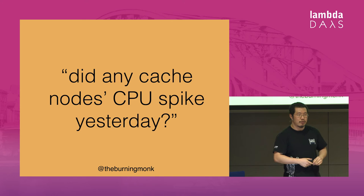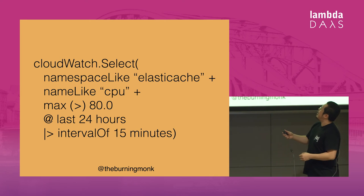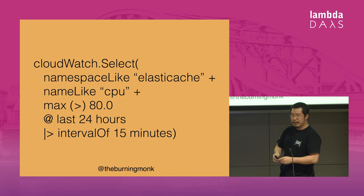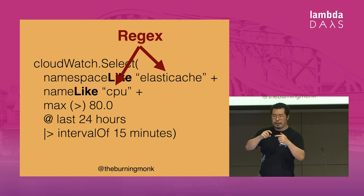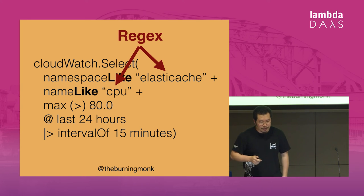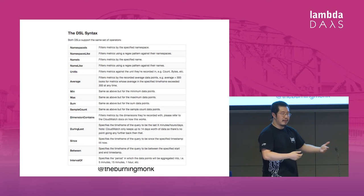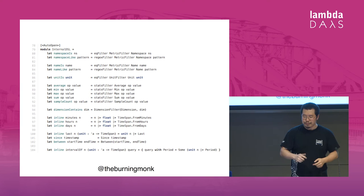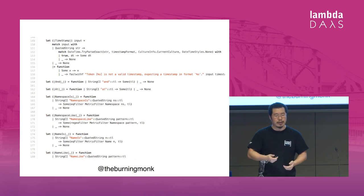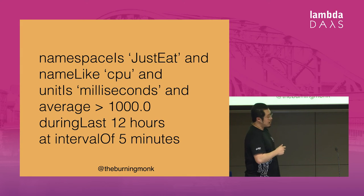So now if I want to know if any of my cache nodes had a CPU spike yesterday, I can express it using this DSL. It supports regex as well — every metric in CloudWatch has a namespace, a name, and different dimensions. For example a CPU metric for your Redis cluster would have different dimensions for each node. In all, there are only about 15 different filter cases you can use based on CloudWatch capabilities. For this project I decided not to use FParsec and instead write parsers using an F# feature called active patterns.